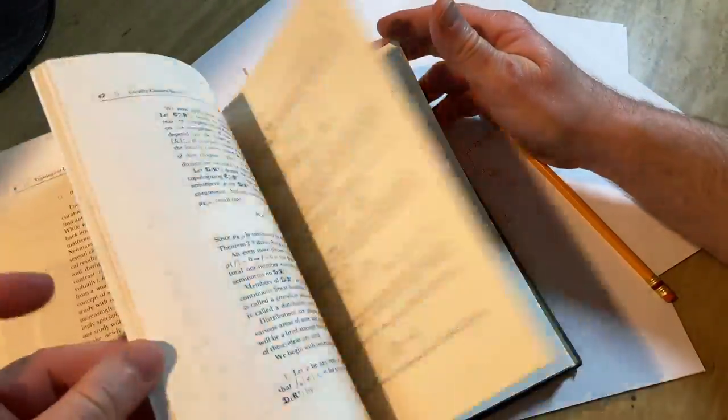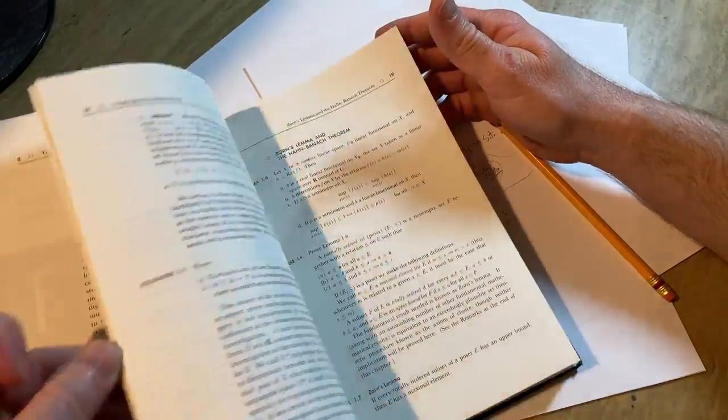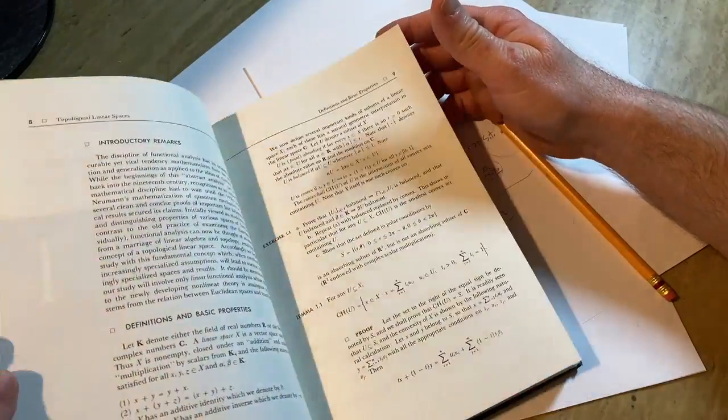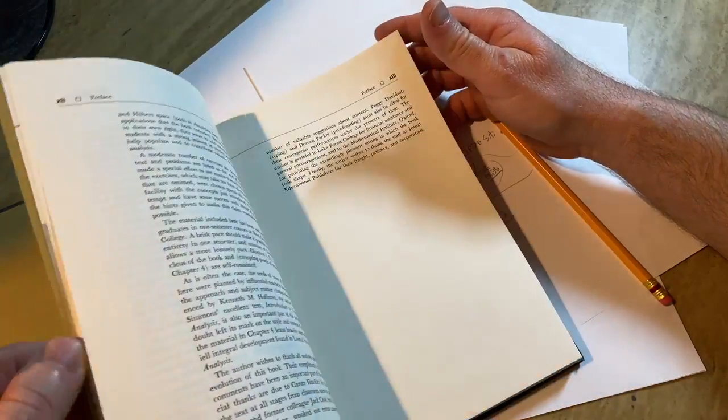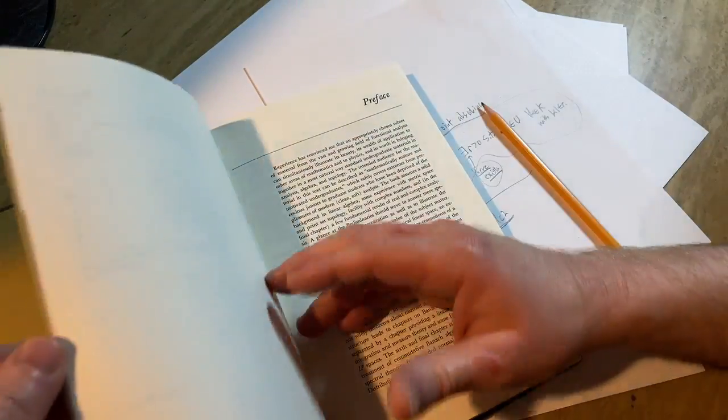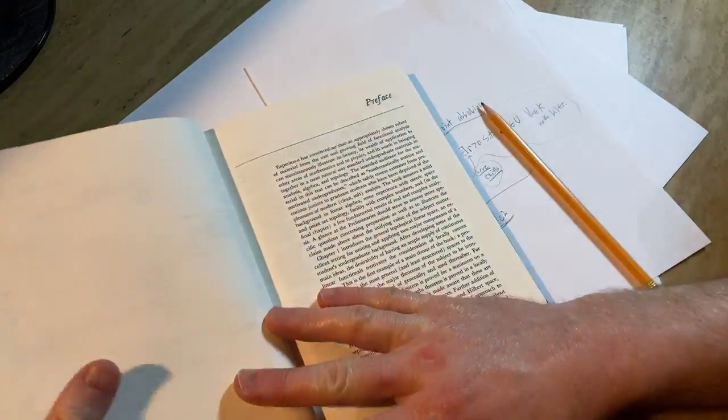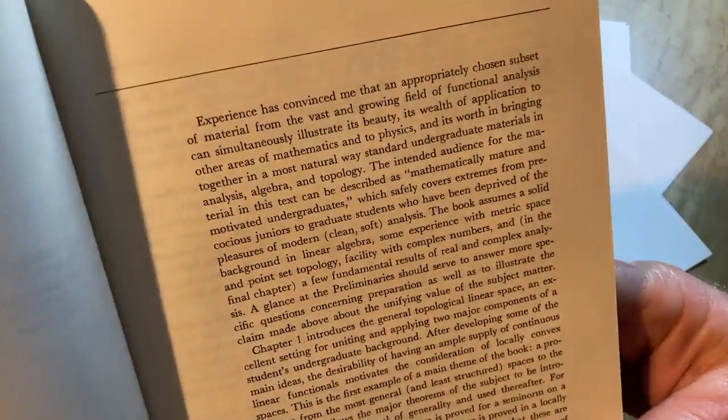So this book, let's take a look at this book. This book is on functional analysis. Let's see who the target audience is. See if we can find that somewhere in the book. Here we go. I think that's it here. Let's read this. It's the preface. I love the preface.